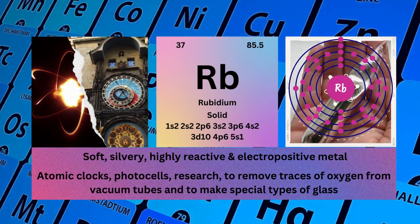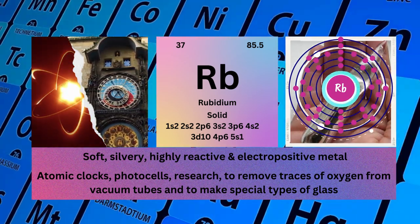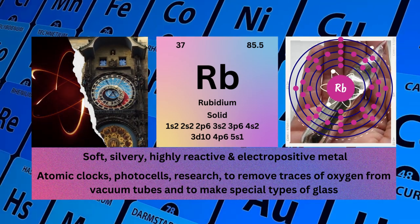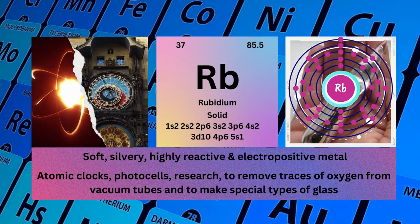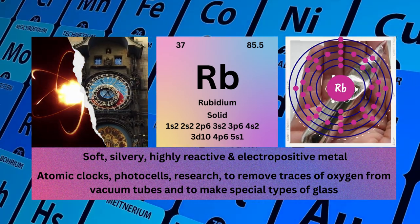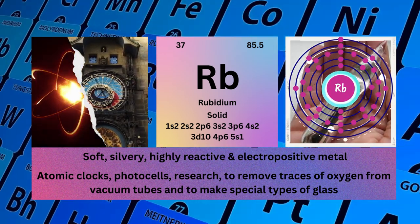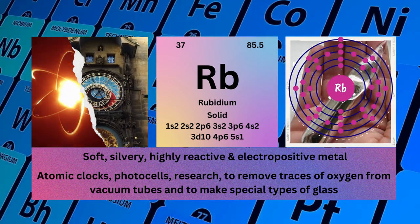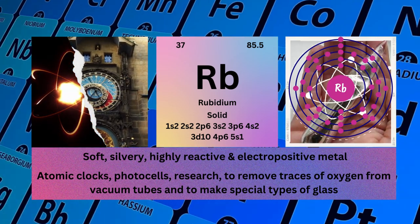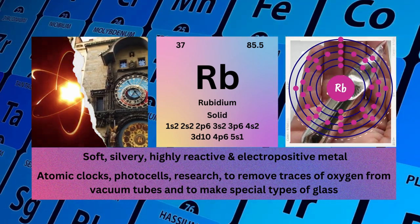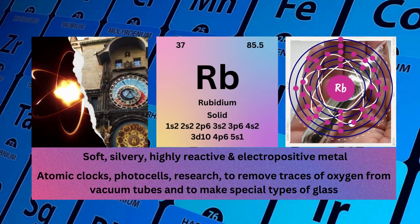Physical properties: soft, silvery, highly reactive and electropositive metal. Rubidium used as atomic clocks, photocells, research, to remove traces of oxygen from vacuum tubes and to make special types of glass.